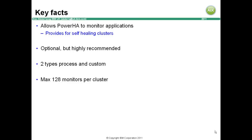Application monitoring provides for self-healing clusters. You can have multiple application monitors per application controller or application server, up to 128 cluster-wide. There are two types of application monitors you configure: process and custom.